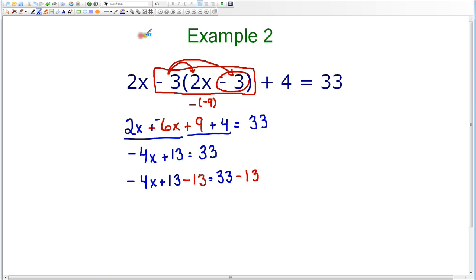Now, as I go back to the left-hand side, I know that 13 minus 13 is 0, and I'm left with negative 4x, and on the right-hand side, I have 33 minus 13, which is going to give me 20.